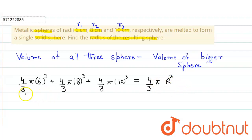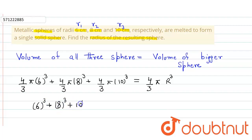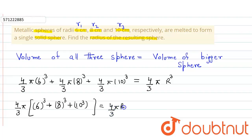Now (4/3)π will simply cancel out from both sides. So ultimately we get 6³ + 8³ + 10³ = r³.